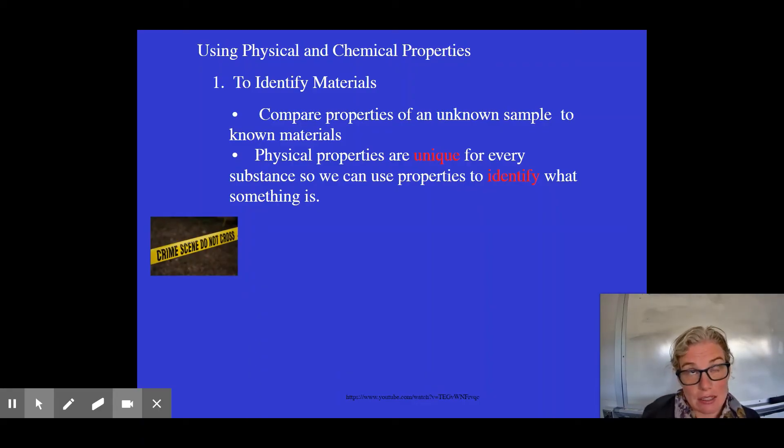Imagine a white powder is left at a crime scene. There are so many different types of white powders. Even in your kitchen, you spill sugar, salt, and baking soda and can't tell which is which. If you know the physical and chemical properties of sugar, you can run tests on the unknown substance to see if it matches. That could then be used to link a suspect to the crime scene.